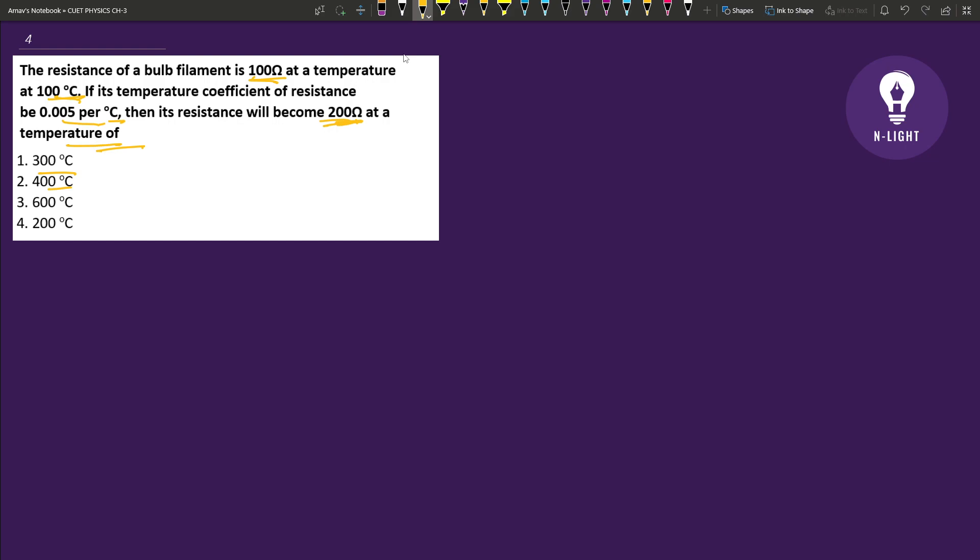We have the formula: RT minus R initial equals R initial times alpha delta T. We have the final resistance, initial also, and alpha also. We need to determine the final temperature.